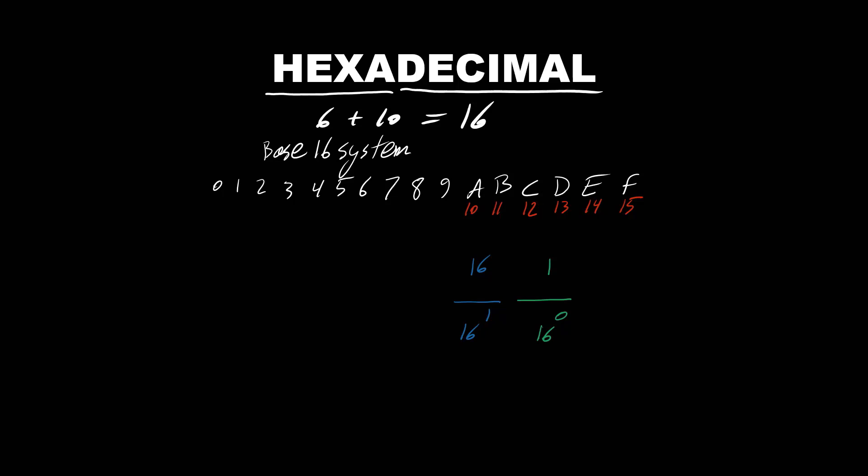Continuing one more place to the left, place value position 2, 16 to the power of 2 is 256. And place value position 3, 16 to the power of 3 is 4096.